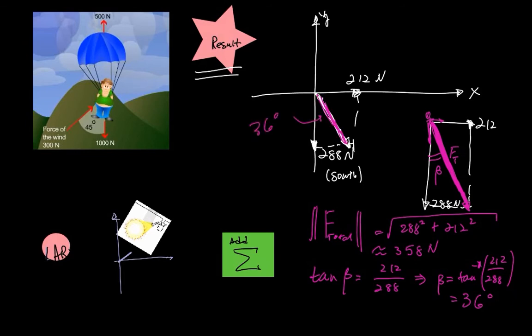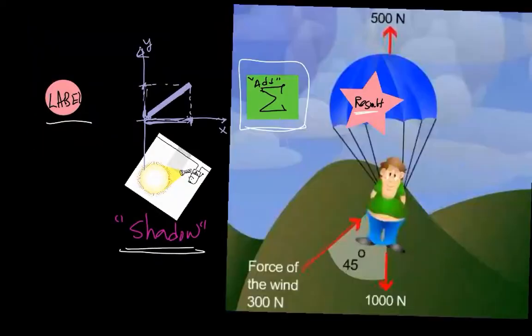So to do a quick recap, the 4 steps: label, shadow, add, and resultant. For our case, this poor fellow is going to be drifting downward, 36 degrees southeast, at 358 newtons. That's the magnitude.